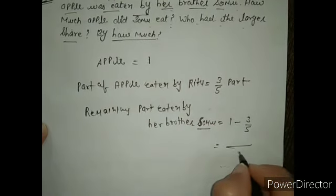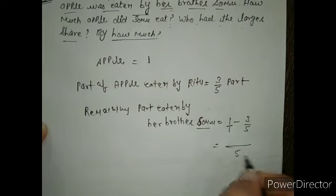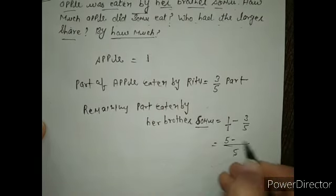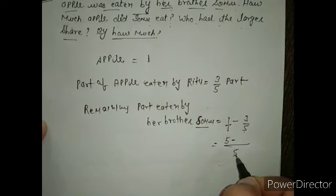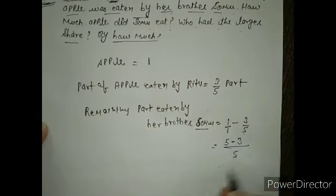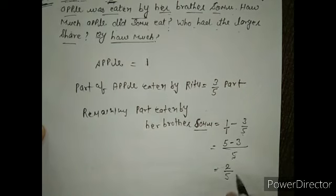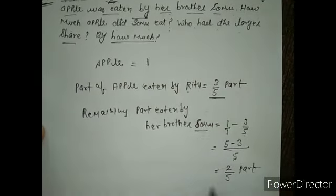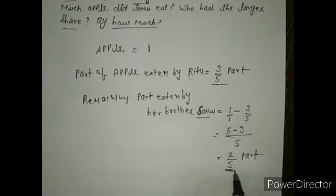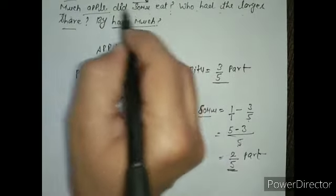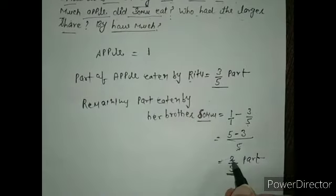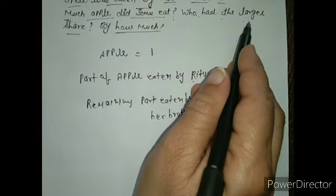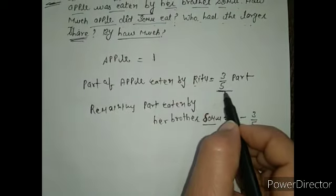To calculate Somu's share: write 5 as the common denominator. 5 divided by 5 is 1, multiply 1 by 5 to get 5. Then 5 minus 3 gives 2, so the remaining part is 2/5. So 3/5 part was eaten by Ritu and 2/5 part was eaten by Somu. The next question asks how much apple did Somu eat — Somu ate 2/5 part of the apple.